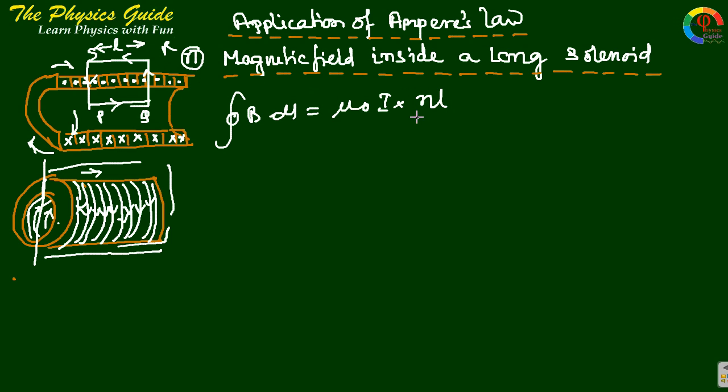NL gives the total number of turns where N equals number per length.